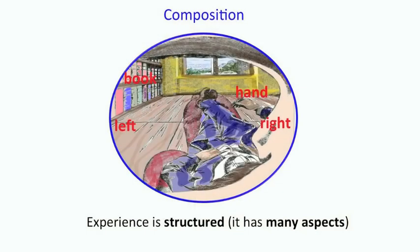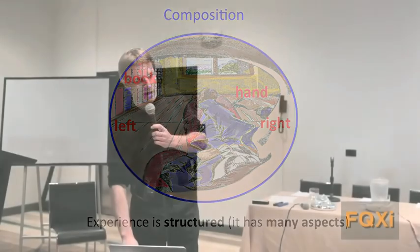Another axiom, which is pretty obvious, is that it is structured. Every experience has aspects to it, different aspects, right and left, top and bottom, hands, books, things, colors, all kinds of things inside any experience, including pure darkness.